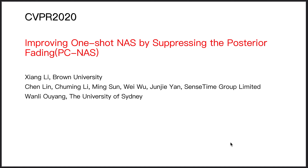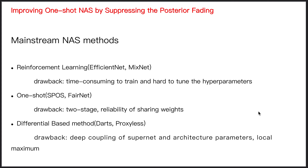We discuss our paper, 'Improving One-Shot NAS by Suppressing the Possible Fading.' The mainstream NAS methods include reinforcement learning, one-shot, and differential-based methods.